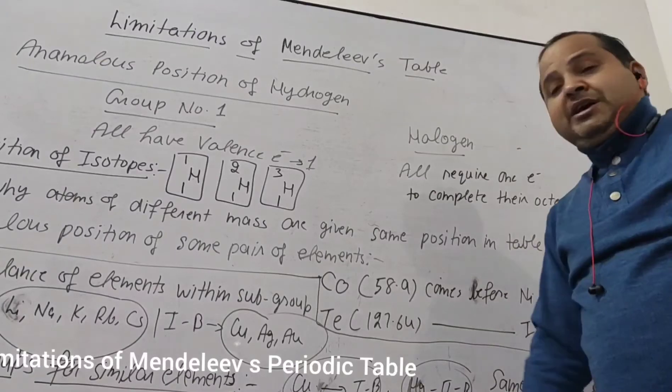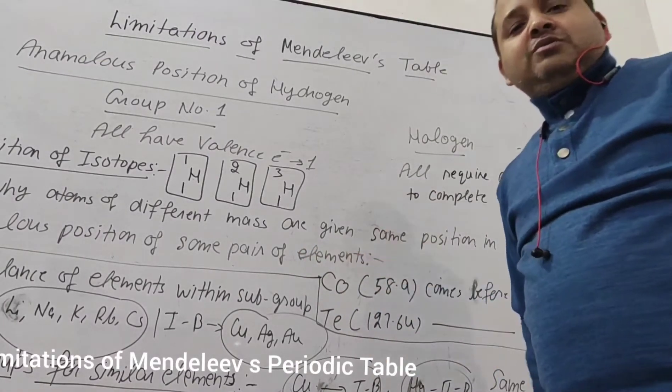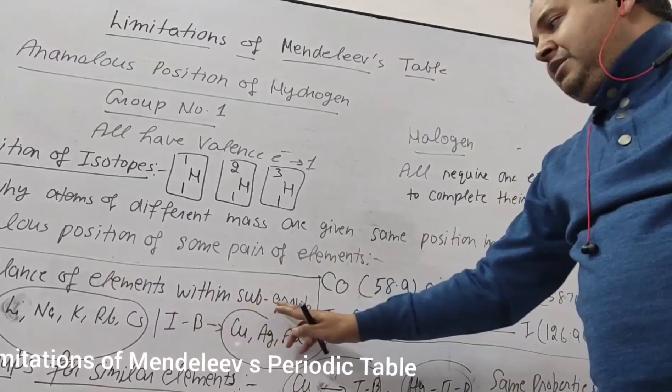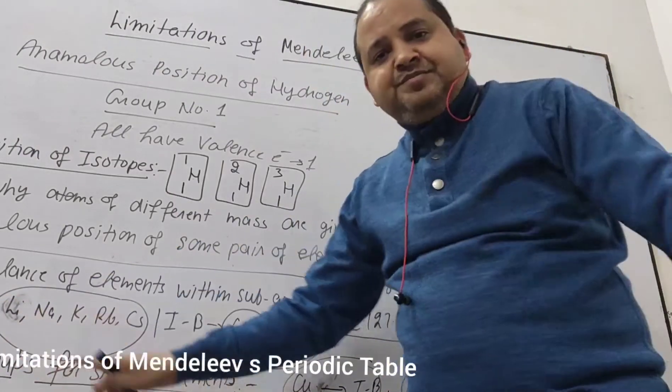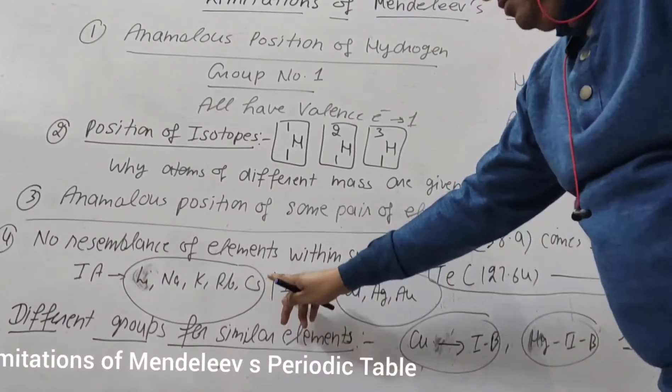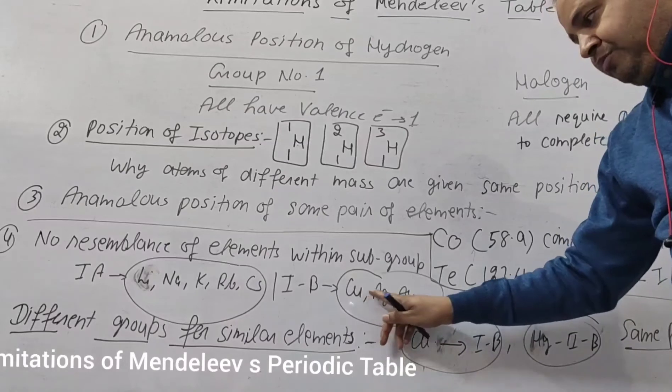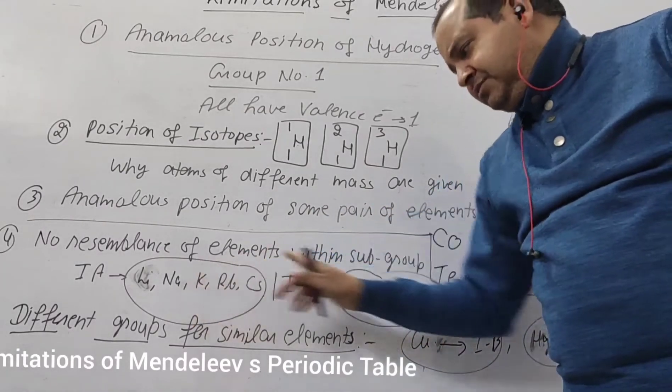So this why this anomalous position of some of the pair of elements is there. The next limitation - no resemblance of elements in the subgroup. You can see that First A we have Lithium, Sodium, Rubidium, Cesium, and they are kept with the first B in the first group - Copper, Silver, Gold. We don't have any similarity of these elements with these.